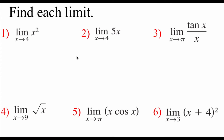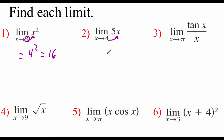We've got six different examples on this page. For the first one, we've got the limit of x squared as x approaches 4. We can just take this 4 and plug it in for our x value, so we've got 4 squared, and 4 squared is 16. In number 2, we've got the limit of 5x as x approaches 4. We take this 4 and plug it in for x, so we've got 5 times 4, which is 20.